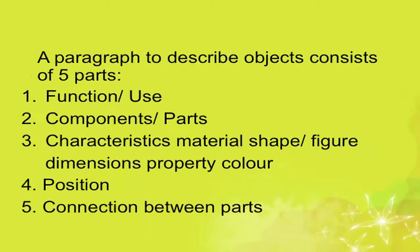A paragraph to describe objects consists of five parts: number one — function or use; number two — components or parts; number three — characteristics such as material, shape, figure, dimensions, or color; number four — position; number five — connection between parts. The connection between parts is especially important.